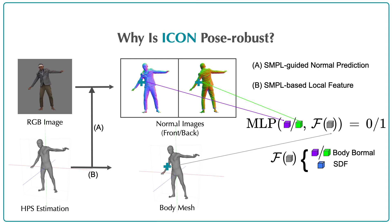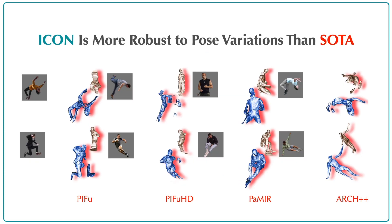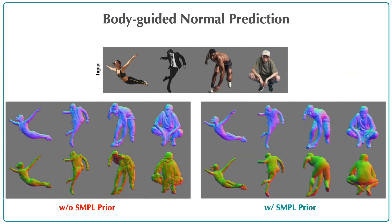Then all these local features are used to regress the implicit surface. In contrast to previous work, all features used for surface regression are locally defined or queried. No global pose information is encoded. ICON works well on the challenging poses where state-of-the-art methods fail.